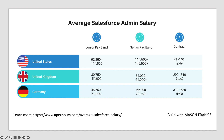Here is the average salary for the Salesforce admin based on the Mason Frank survey. In the United States, a junior Salesforce admin makes $92,000 to $140,000 on average. Senior admins make $114,000 to $150,000 on average. On a contract rate, they can make from $71 to $140 per hour. In the United Kingdom, junior admins make around £30,000 to £51,000.